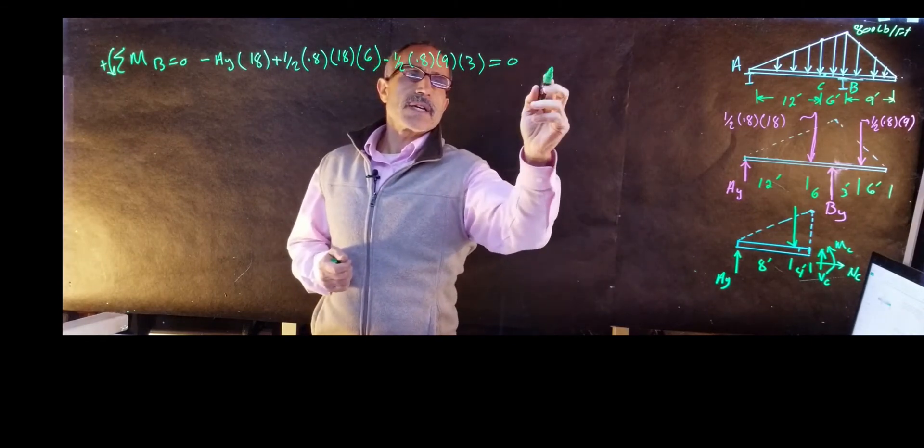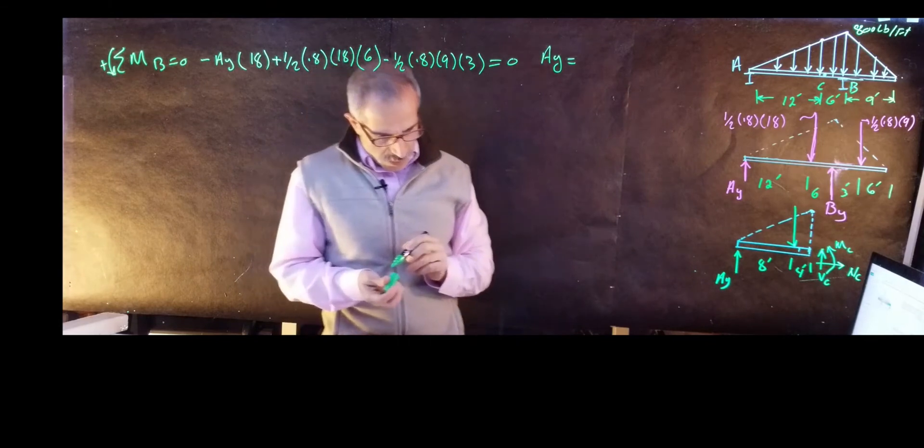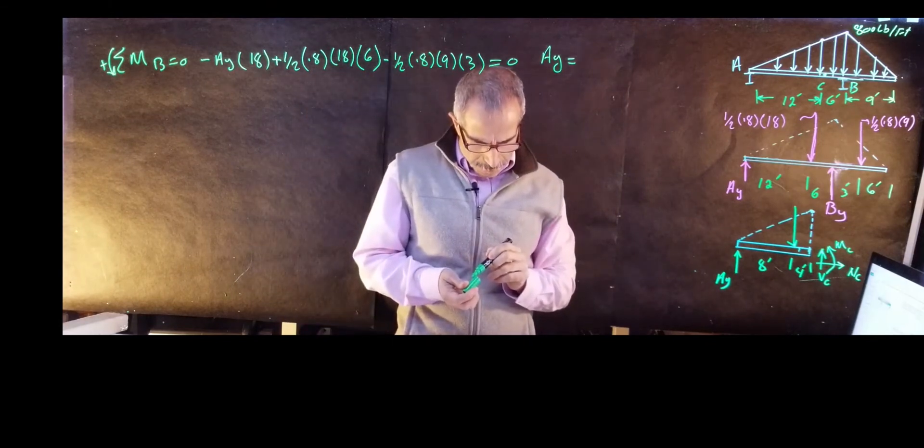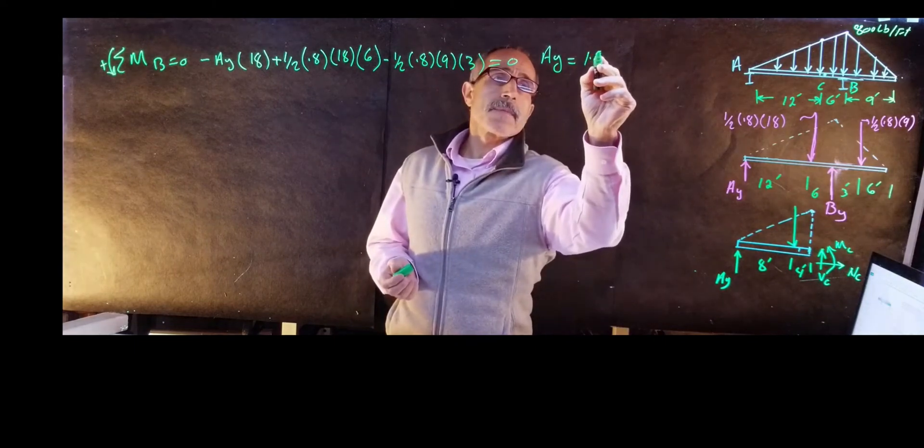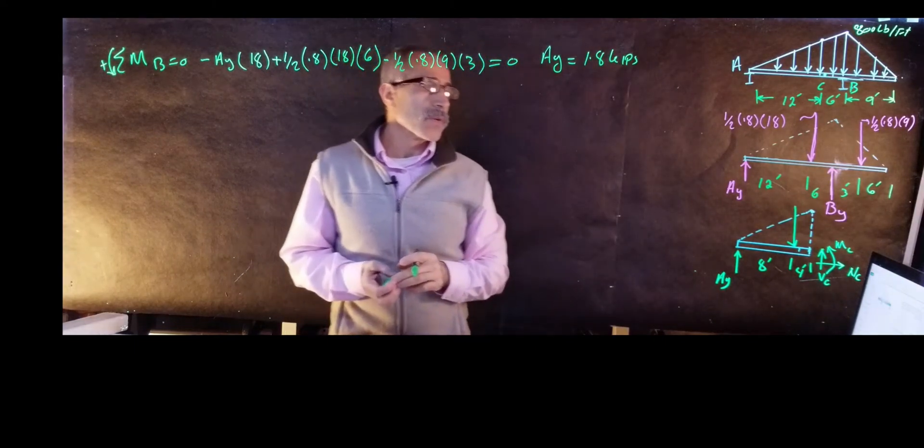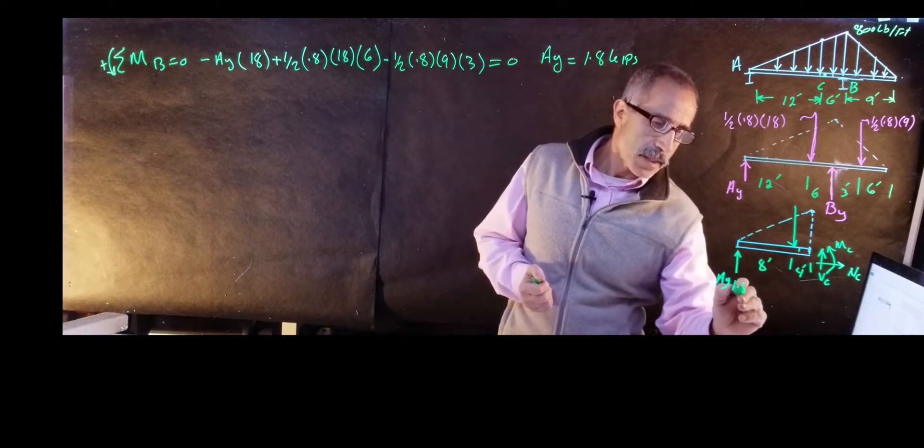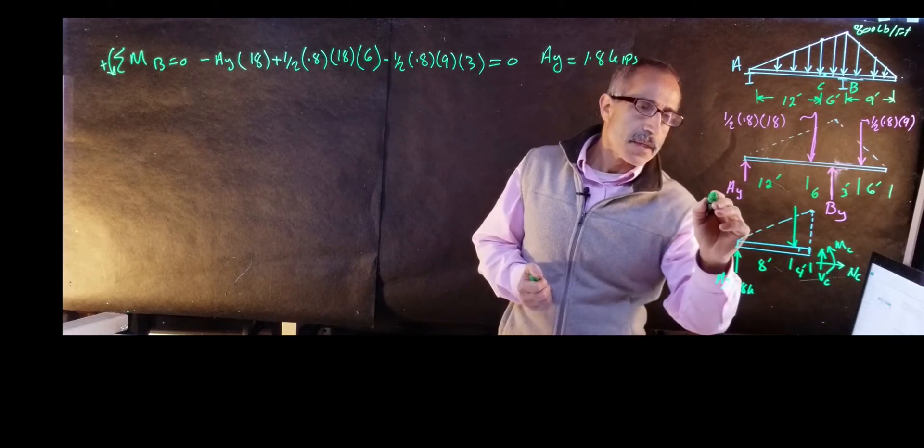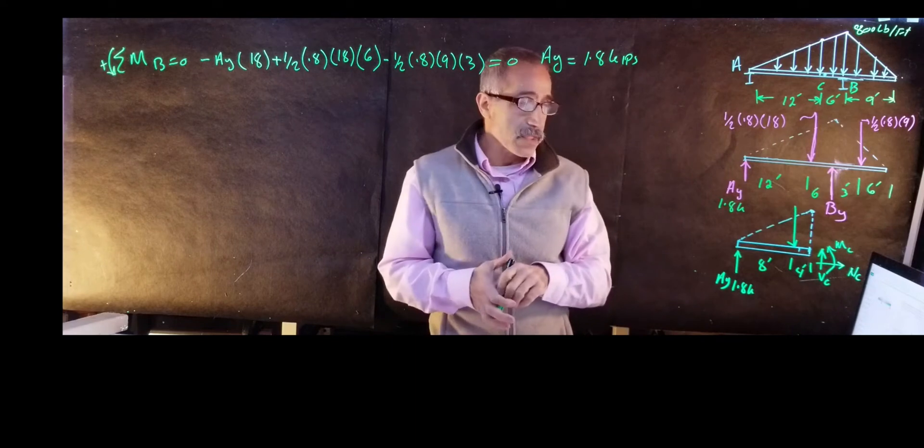So equals 0, and that should give me AY is equal to 1.8 kips. It comes out to 1.8 kips. I don't care what B is at this point because I don't need it.